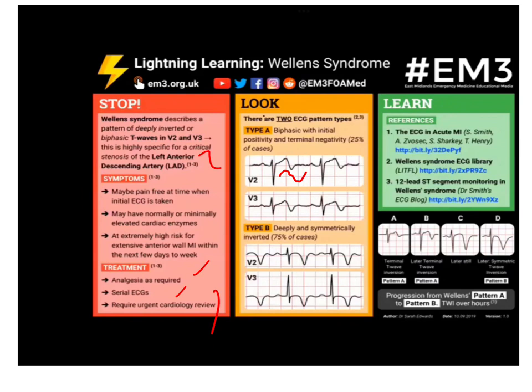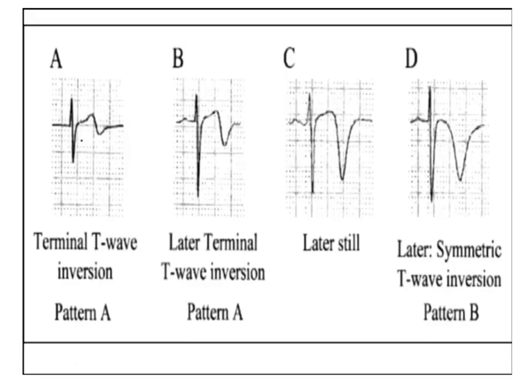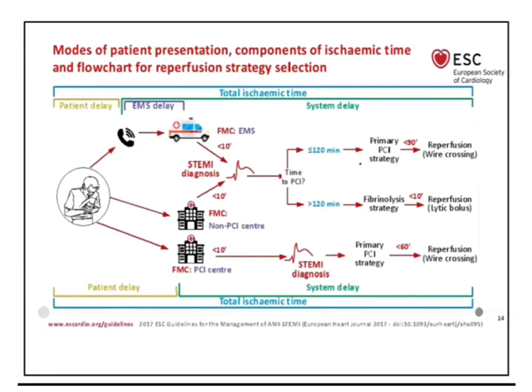In Wellens type B, we get deep, symmetrical T wave inversion in more than 75% of cases. In type A we get a biphasic T wave — initially upsloping, then inverted. In type B we get deep, symmetrical T waves.